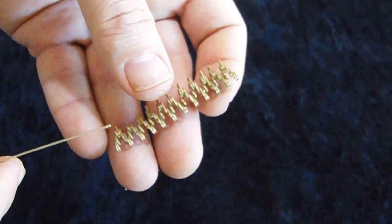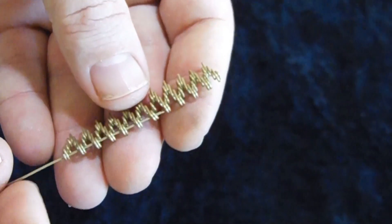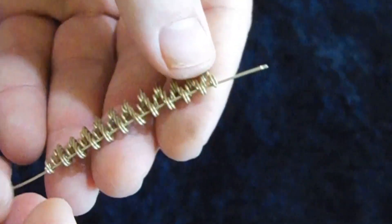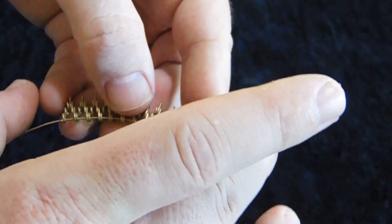First, we'll pass the second wire through the first loop of the initial wire. Then, we'll bend the second wire and cross it two or three times.